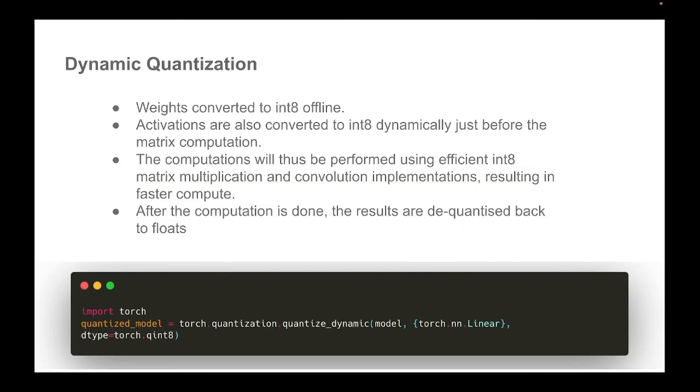So again, you can imagine this happening as you get the max value and the min value and map that range to the integers using the scale and zero point and then doing this transformation. And because both the weights and the inputs are in int8, we can do matrix multiplication using efficient int8 implementations, thus resulting in faster compute. After the computation is done, the results are dequantized back to floats so that it can be passed on to the next layer. Dynamic quantization is probably the easiest to implement and try out. If you see the code, it's just one line. You just import torch and then use this quantize dynamic function where you pass in your model name and you pass in a set of layers that you want to quantize. So here, if you see, we are only quantizing the linear layers and then we express what is our target type that we want it to be. So we have this format called qint8 which represents the integer 8 with quantization. And finally, we get the quantized model.